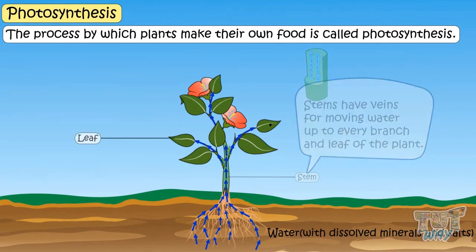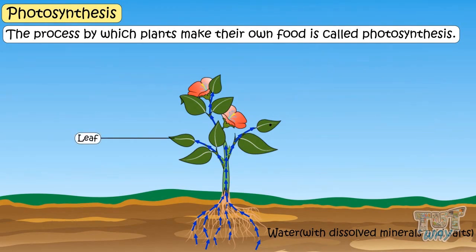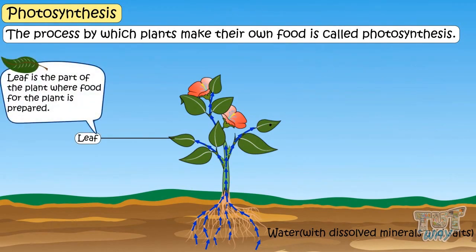The leaf is the part of the plant where food for the plant is prepared. And the process by which food is prepared by plants is called photosynthesis. Let's learn about it more!